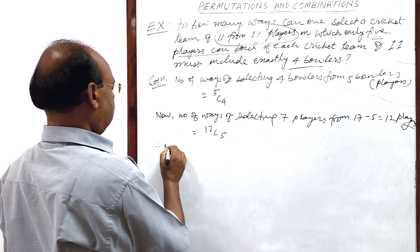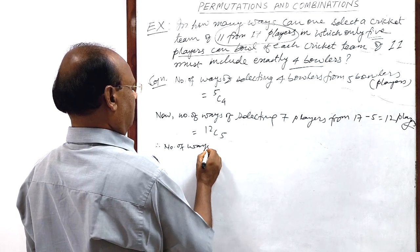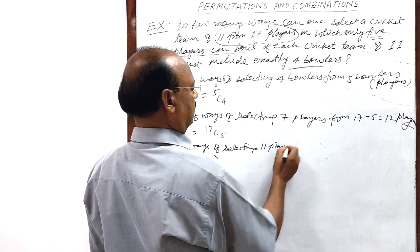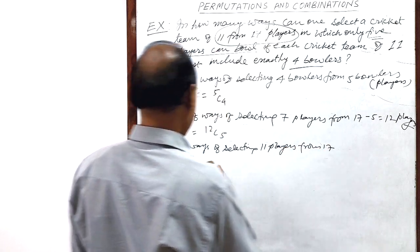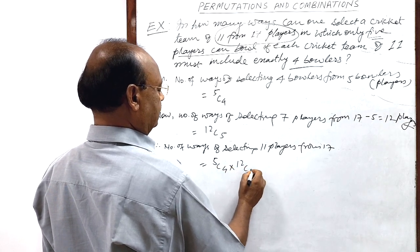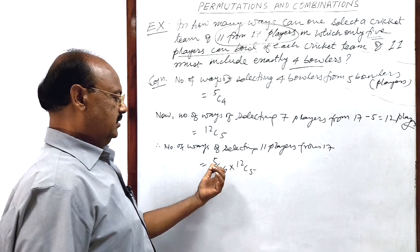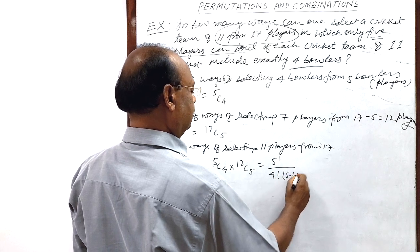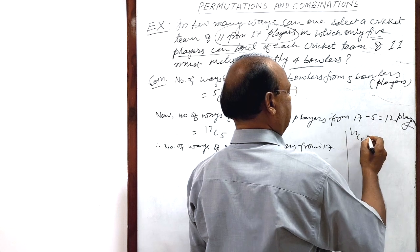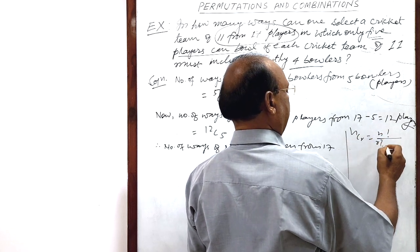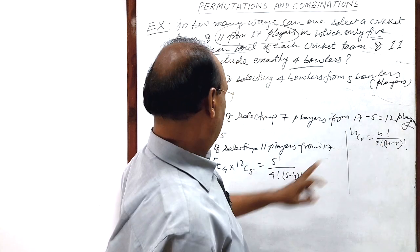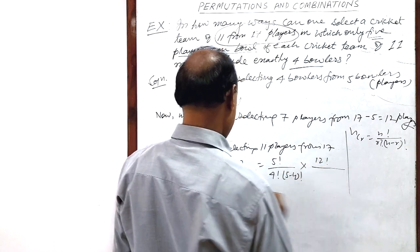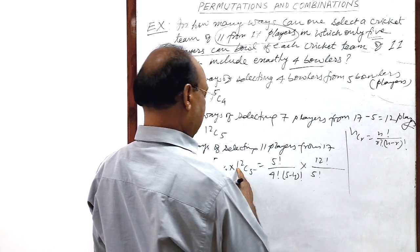Therefore, number of ways of selecting 11 players from 17 is equal to 5C4 into 12C5. We can calculate it easily. Since 5C4 is equal to 5 factorial by 4 factorial into 5 minus 4 factorial. We have to use this formula here. nCr is equal to n factorial by r factorial into n minus r factorial. By that formula, we can write 5C4 is equal to like this. And 12C5 is 12 factorial divided by 5 factorial into 12 minus 5 factorial.